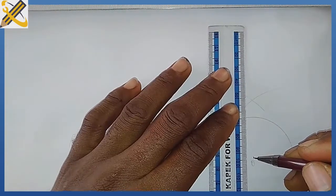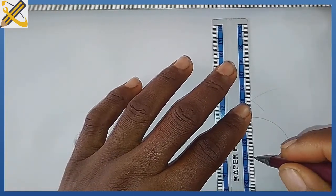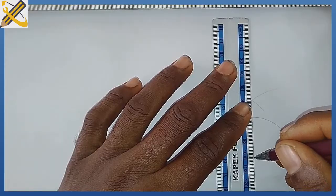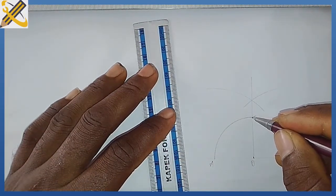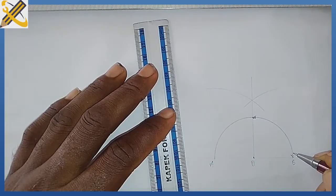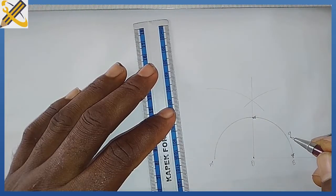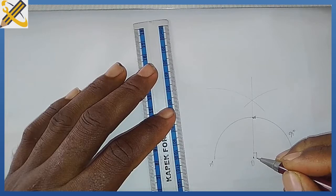From point O, join a line to the point of intersection. The angle formed is 90 degrees, or a right angle.